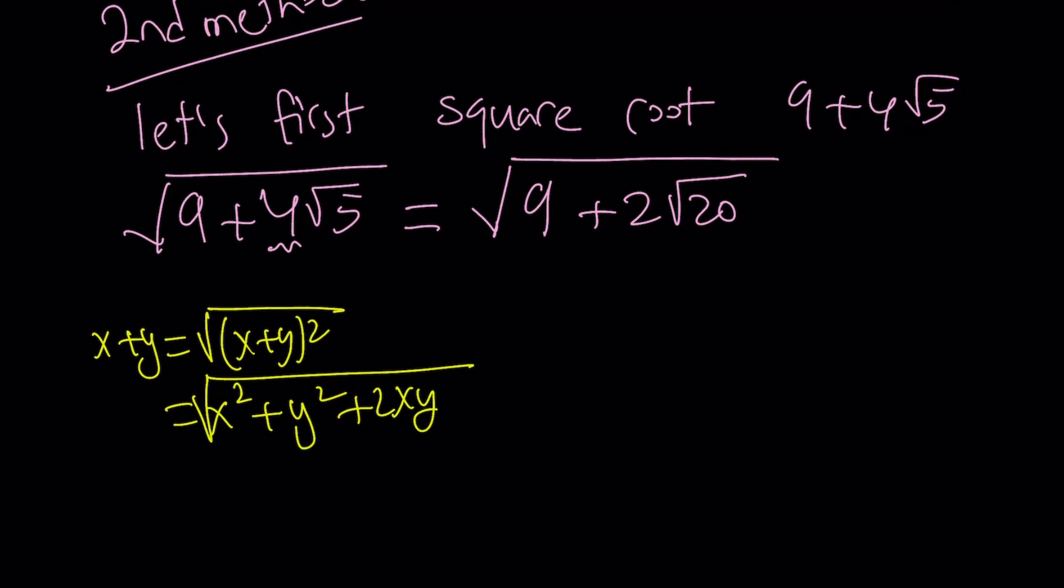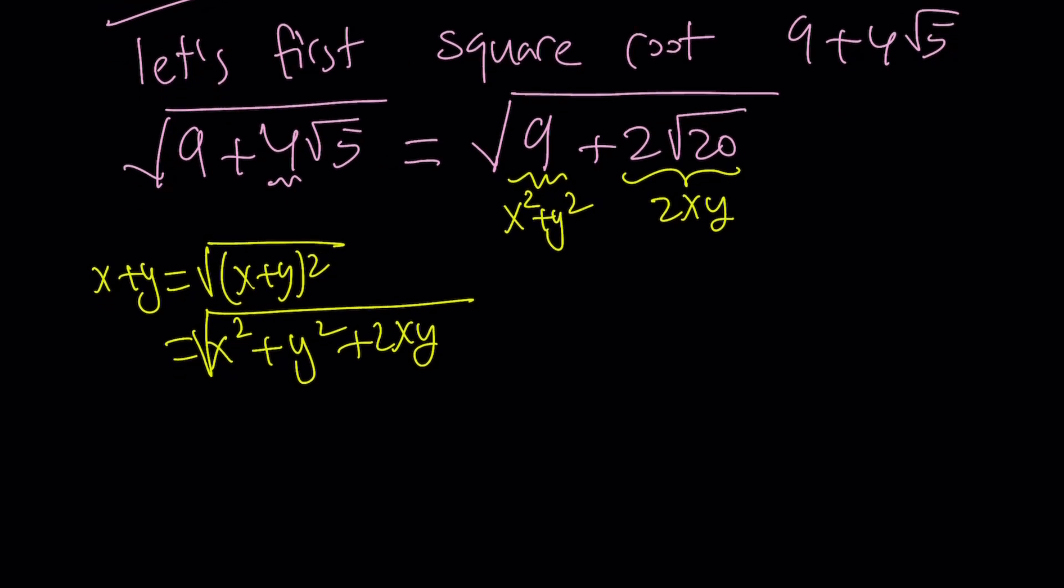After writing it this way, you realize this is supposed to be 2xy, and this is supposed to be x squared plus y squared, if this can be simplified. And this gives us a system. x squared plus y squared equals 9. And if you set 2xy equal to 2 root 20, from here you get xy is equal to the square root of 20. And if you square both sides, you get x squared y squared equals 20.